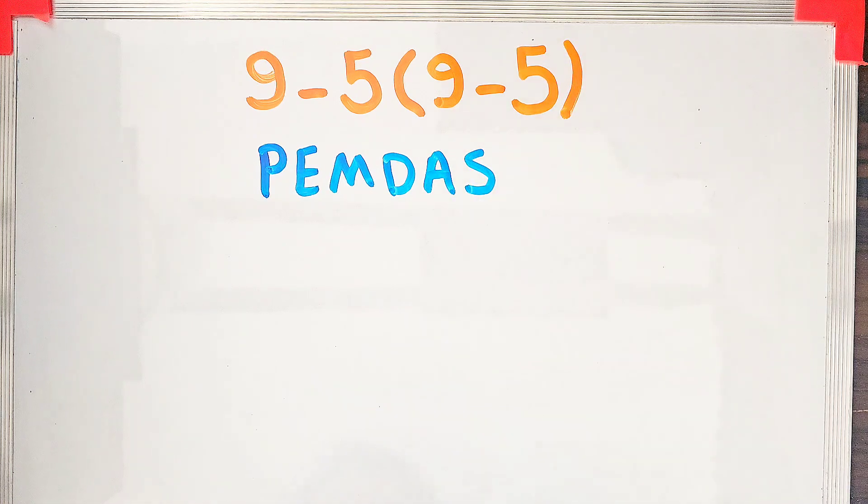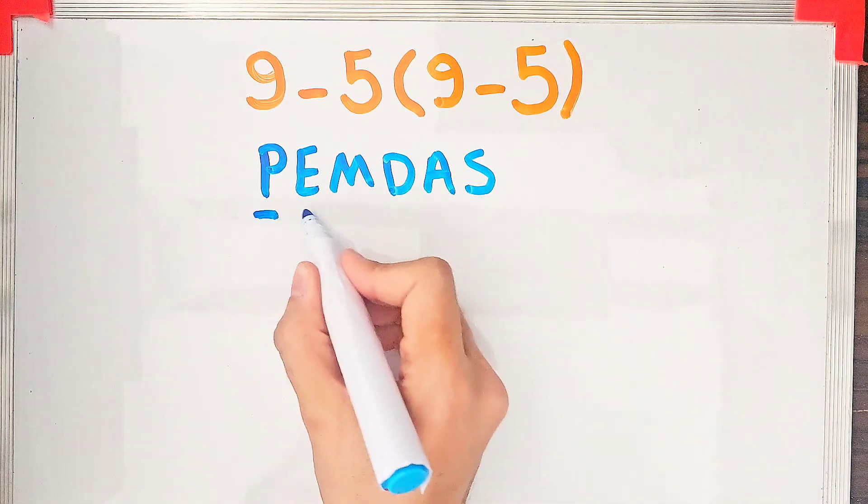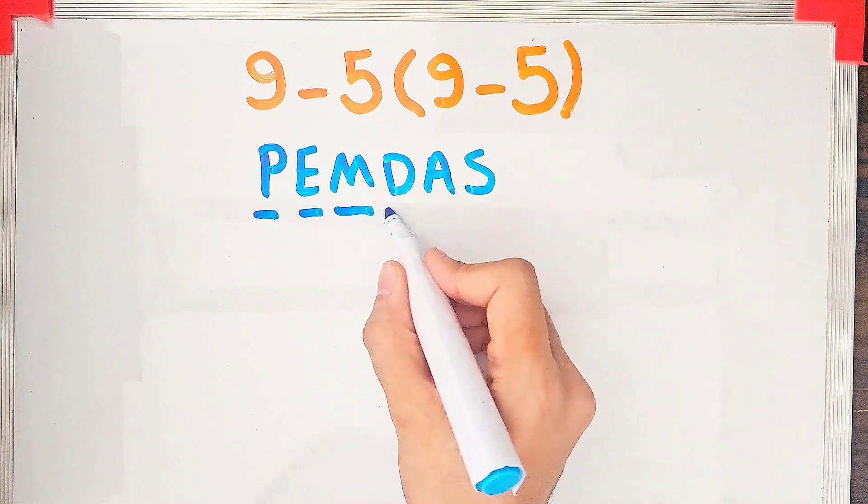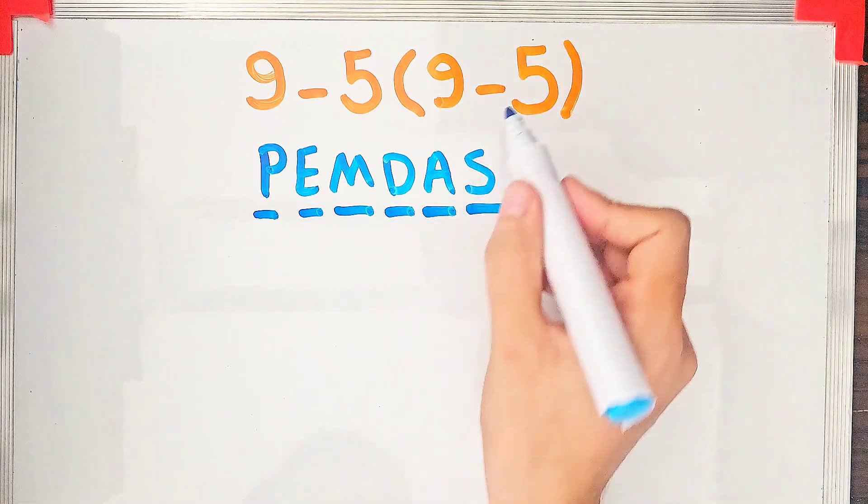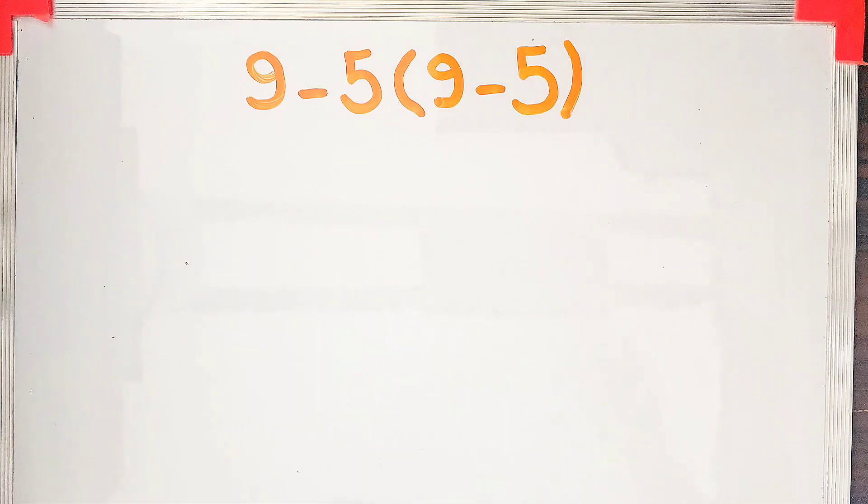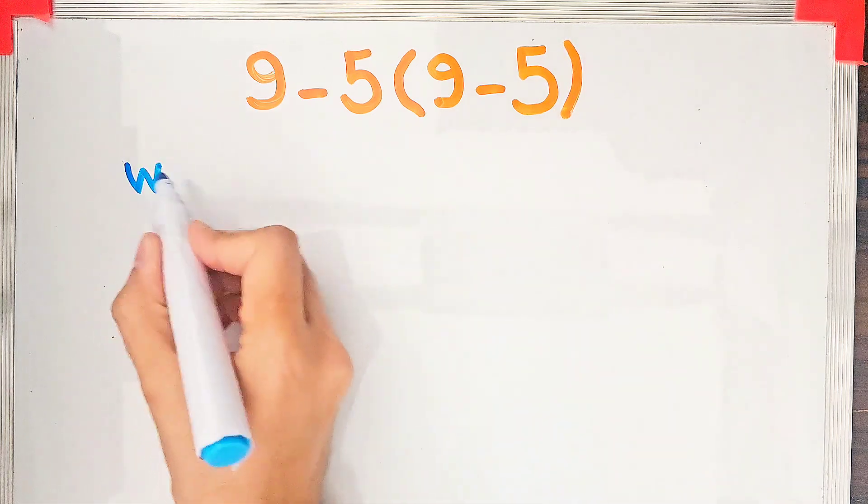If you don't pay attention to the order of operations, you get the wrong answer. In the PEMDAS rule, P stands for parenthesis, E stands for exponent, M multiplication, D division, A addition, and S subtraction.